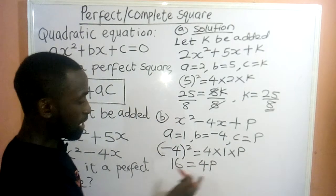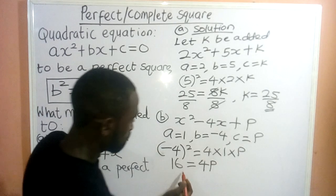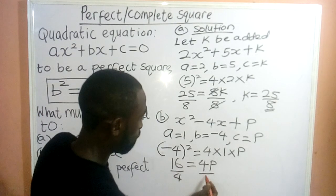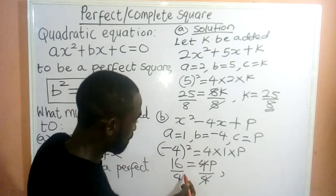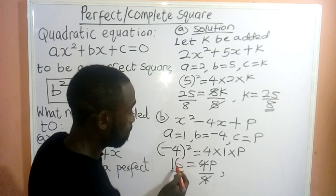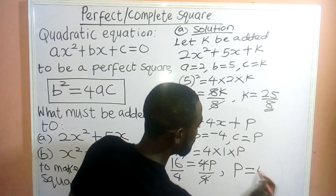So, we make P to stand alone. It means we are dividing through by 4. So, we have by 4, by 4. Which implies this 4 comes to this 4. 4 in 1, 4 in 16, that would give us 4. That would imply that our P would be equal to 4.